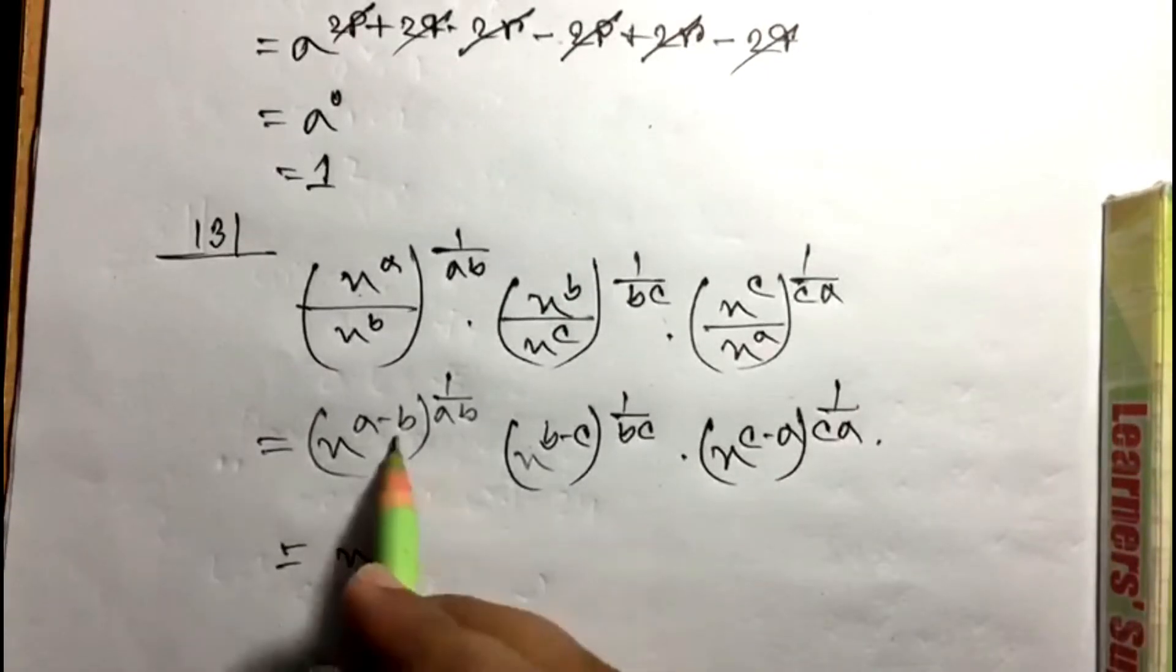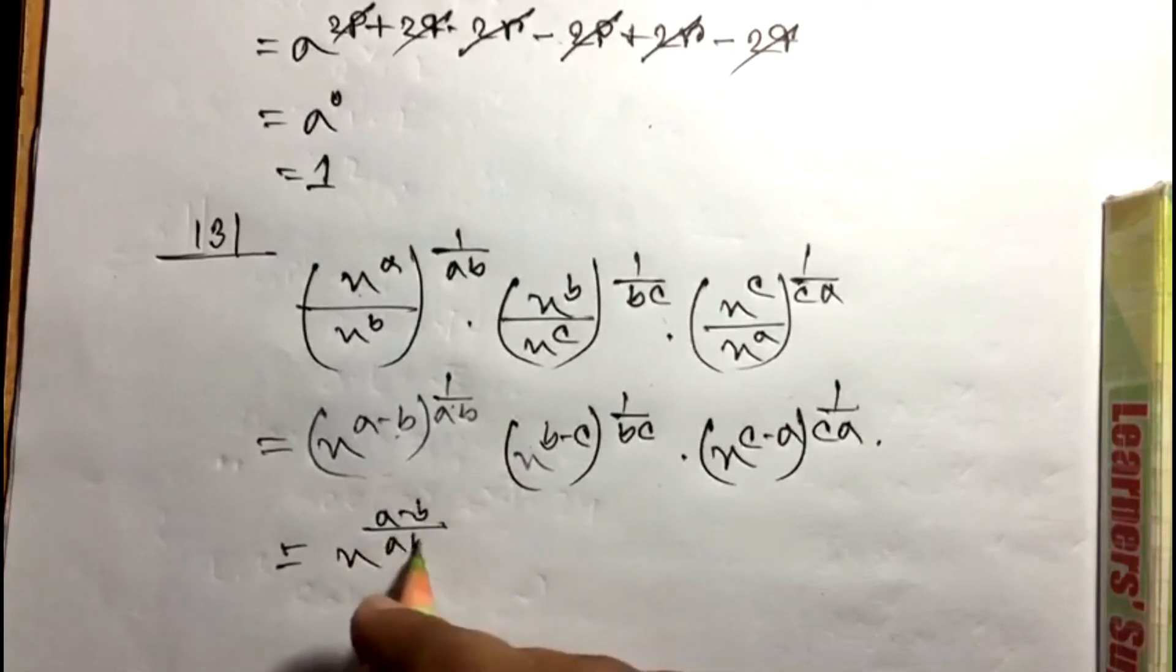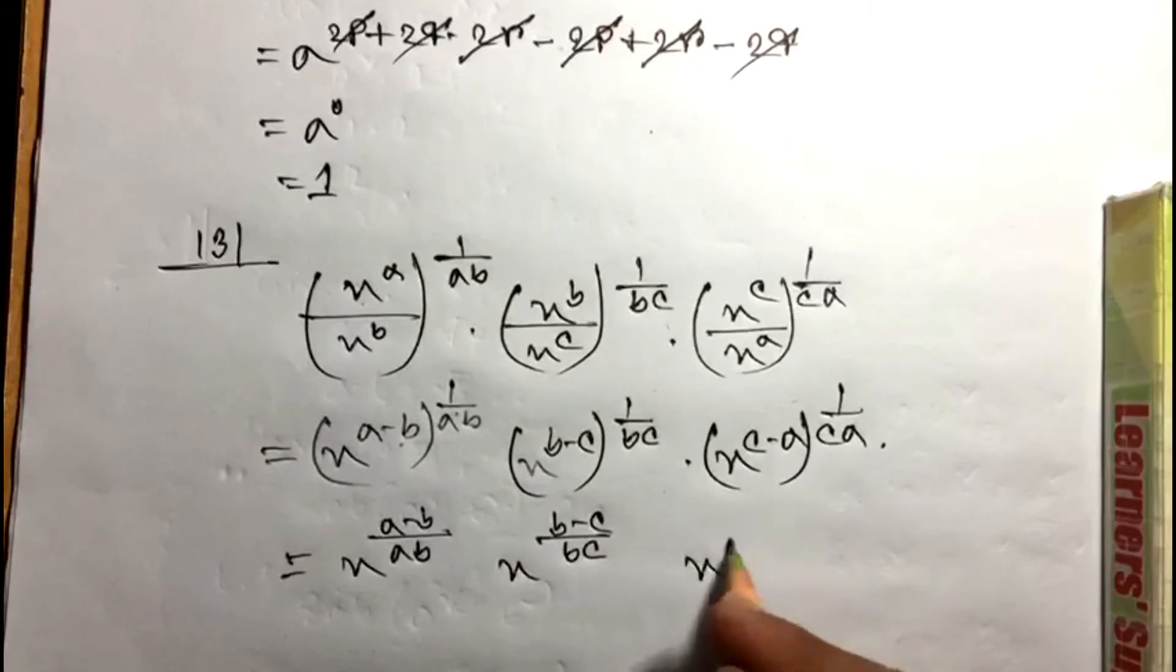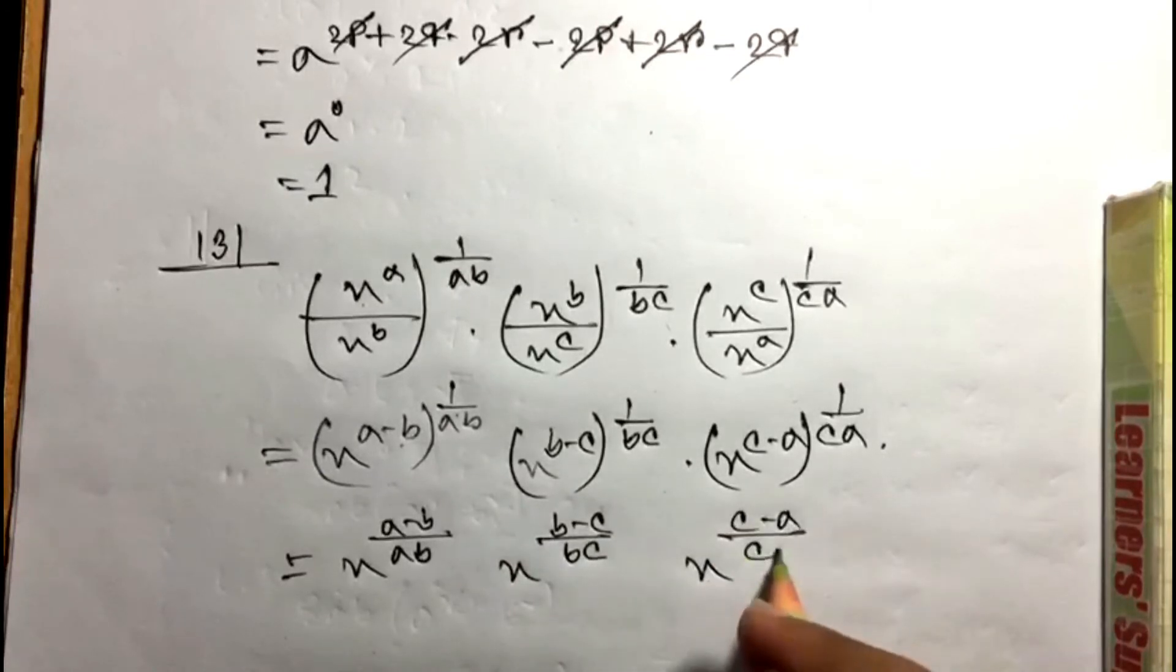Then x power over particle multiply by a minus b by ab, b minus c by bc, c minus a by ca.